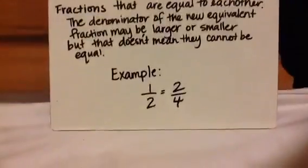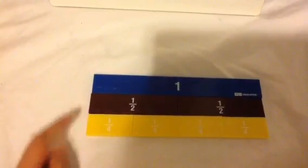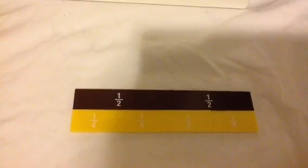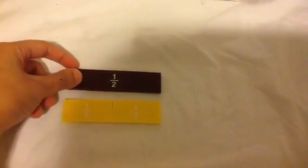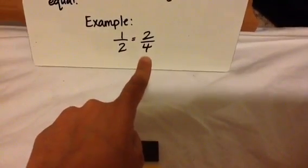Let's look at some manipulatives to help us understand. So right here, I have one whole, two halves that also equal a whole, and four fourths that equal a whole. So I'm going to just remove this, and I'm going to remove these pieces here. So as you can see, one half is equivalent to two fourths, even though this is a larger denominator and a larger numerator, clearly you can see one half is equal to two fourths.